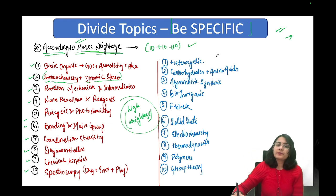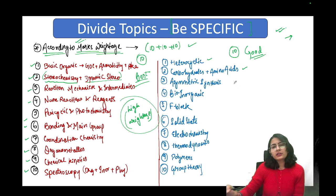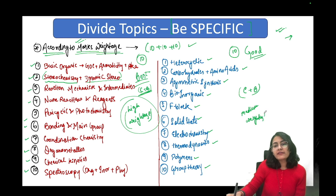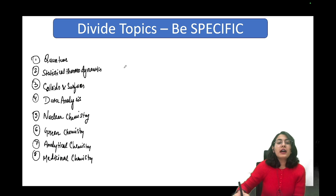First thing is, I have made these first 10 topics in such a way that they are high weightage topics and I am good in all of these. These are my best topics. Basic organic, stereochemistry, dynamic stereo - also remember, stereochemistry doesn't come alone, dynamic stereo comes with it. That is, stereochemistry in reactions is also getting asked. So just take this as a combo. Then, reaction mechanism and intermediate, name reaction and reagents, pericyclic and photochemistry, bonding main group element, coordination, organometallics, chemical kinetics and spectroscopy. All of these are high weightage topics which I have taken to be my best topics that I have already focused on nicely so that I have a broad syllabus coverage to attempt maximum questions.